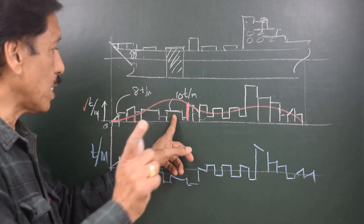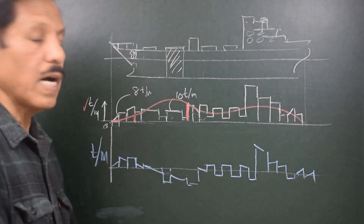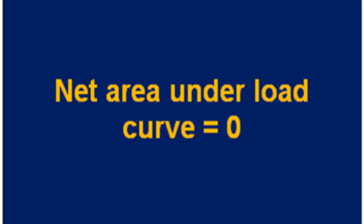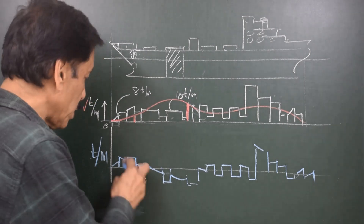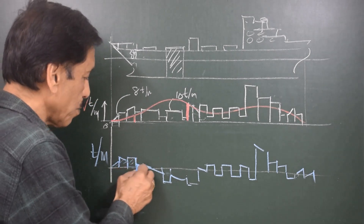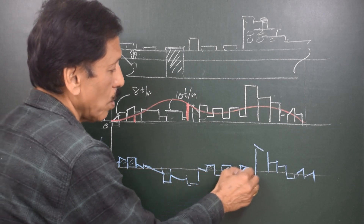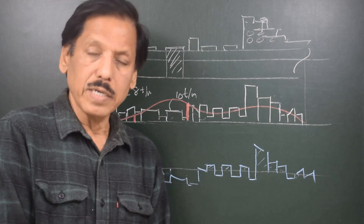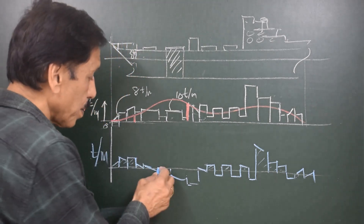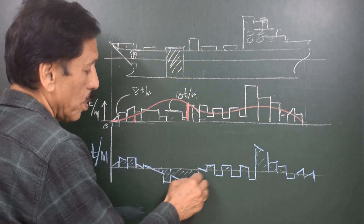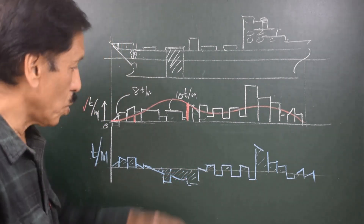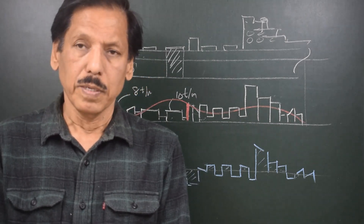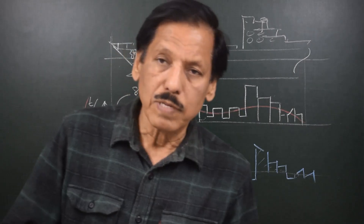The total area under the weight curve equals the total area under the buoyancy curve. Once we have the load curve, I would like to point out that the positive area under the load curve — that is the parts of the curve above the x-axis — equals the negative area under the load curve, which is the part of the curve that goes below the x-axis. So total positive area equals total negative area. This is the condition of the load curve.